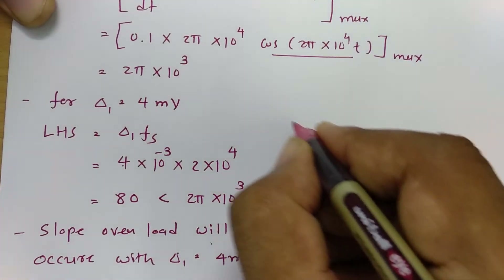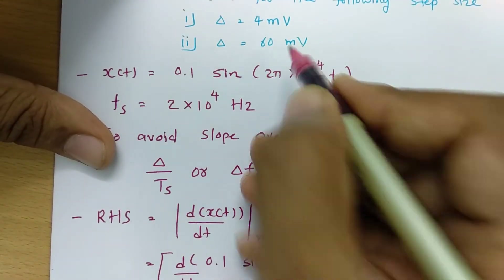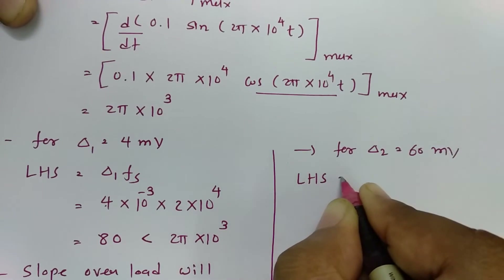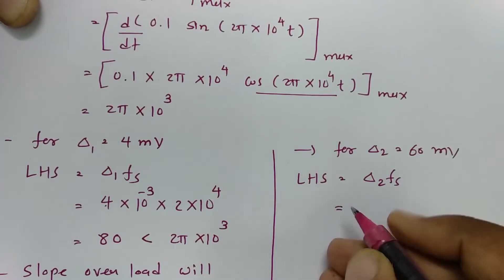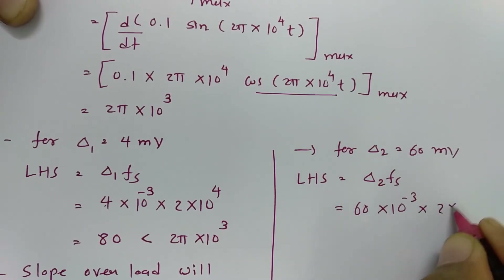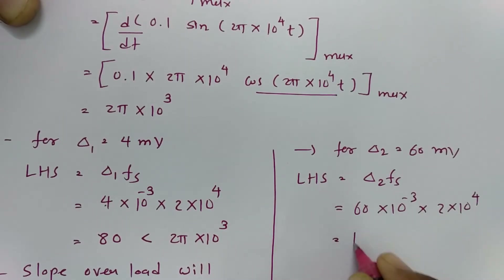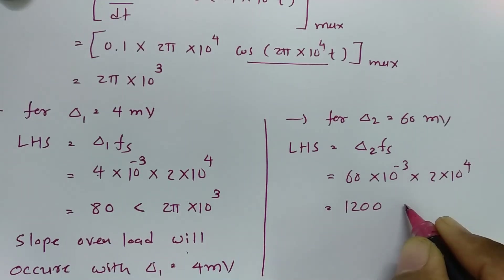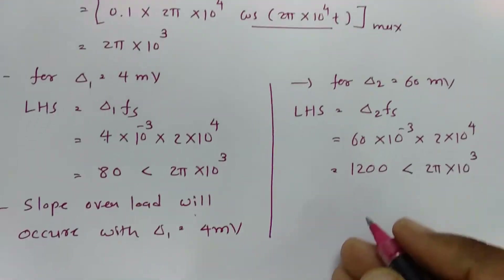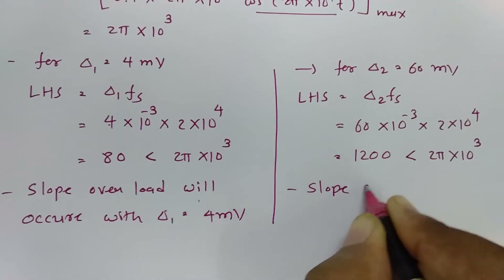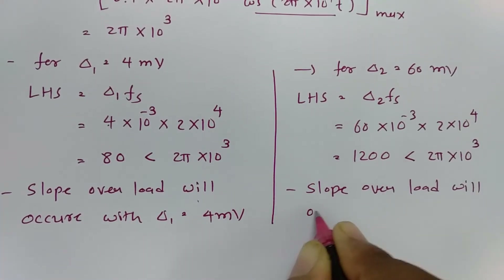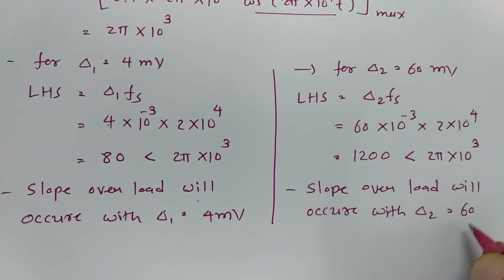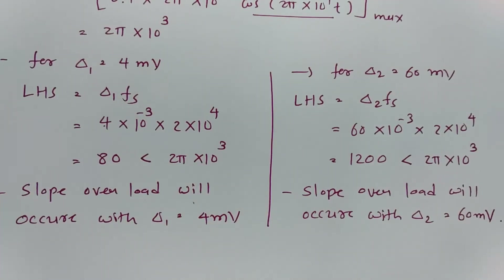For the second case, delta₂ = 60 millivolt. The LHS is delta₂ × fs = 60 × 10⁻³ × 2 × 10⁴ = 1200. This value is still lower than RHS (2π × 10³ ≈ 6283). So LHS is even lower than the required value, meaning slope overload will also occur with delta₂ = 60 millivolt.